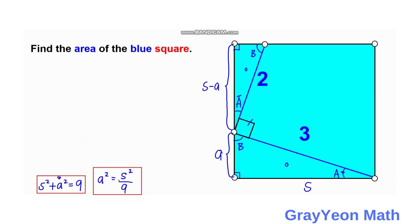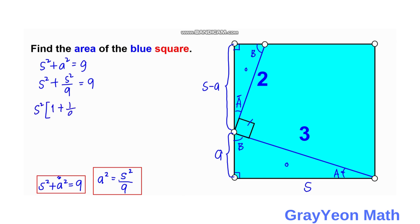We go back to the first equation: S squared plus A squared equals 9. We substitute A squared with S squared over 9, giving S squared plus S squared over 9 equals 9. Factoring out S squared on the left-hand side, we have S squared times (1 plus 1 over 9) equals 9.